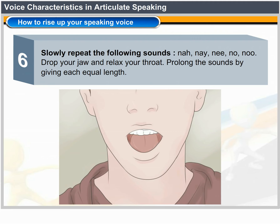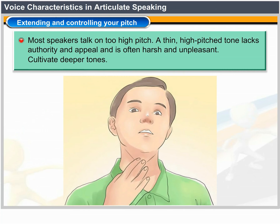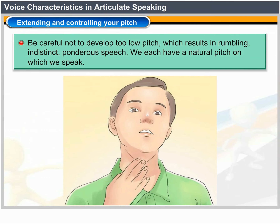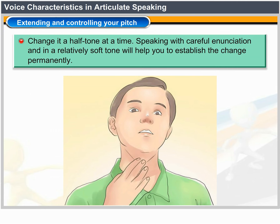Extending and Controlling Your Pitch. Most speakers talk on too high a pitch — a thin, high-pitched tone lacks authority and appeal and is often harsh and unpleasant. Cultivate deeper tones, but be careful not to develop too low a pitch which results in rumbling, indistinct, ponderous speech. We each have a natural pitch on which we speak. If your natural pitch needs to be lowered, work on it by consciously pitching your voice lower in all conversation, changing it a half-tone at a time. Speaking with careful enunciation and in a relatively soft tone will help you establish the change.